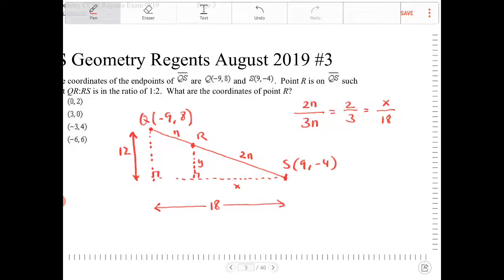And the same thing could be said about the vertical component. 2 thirds is equal to Y over 12.